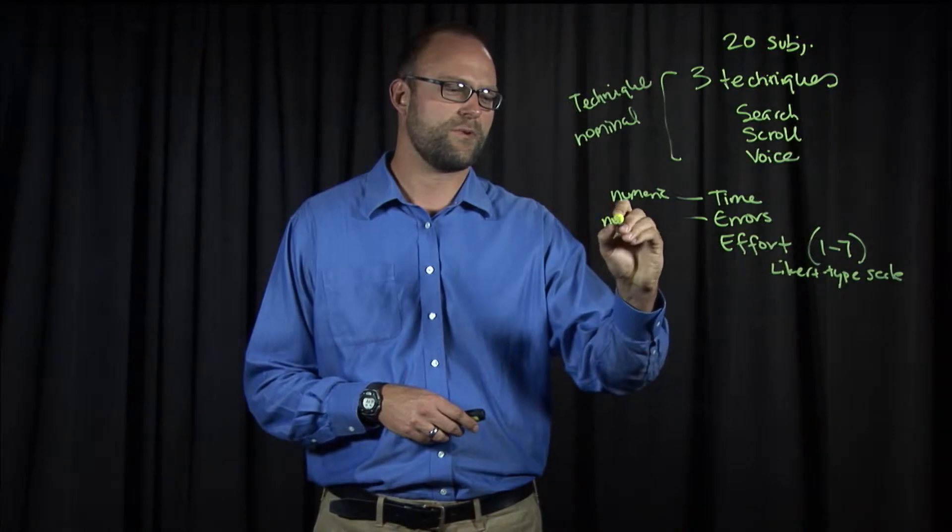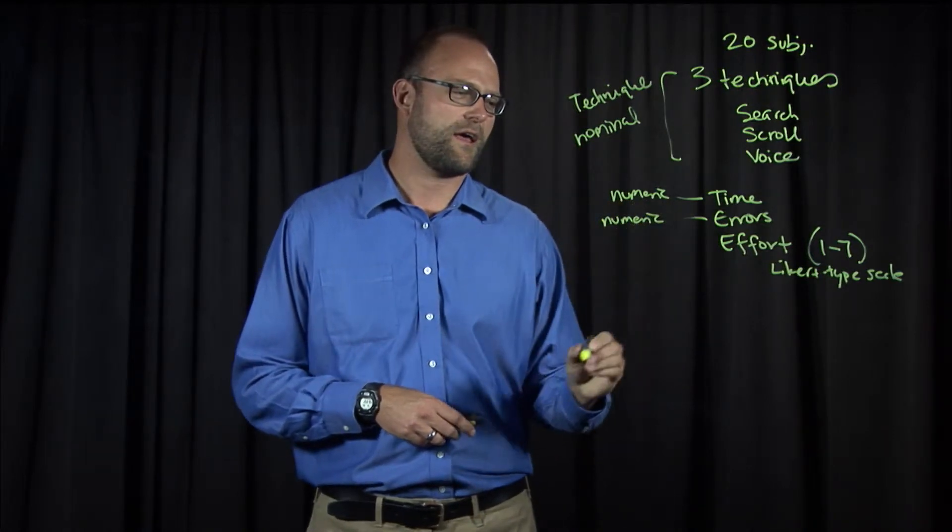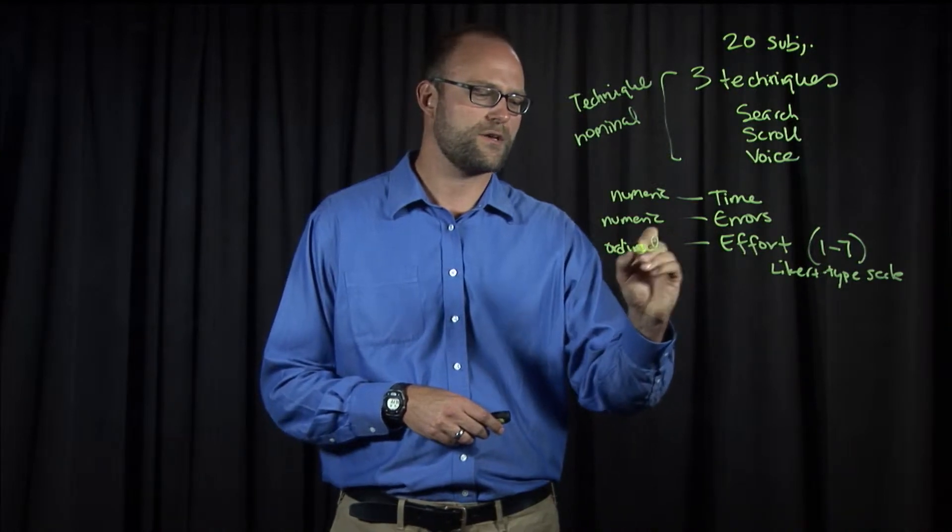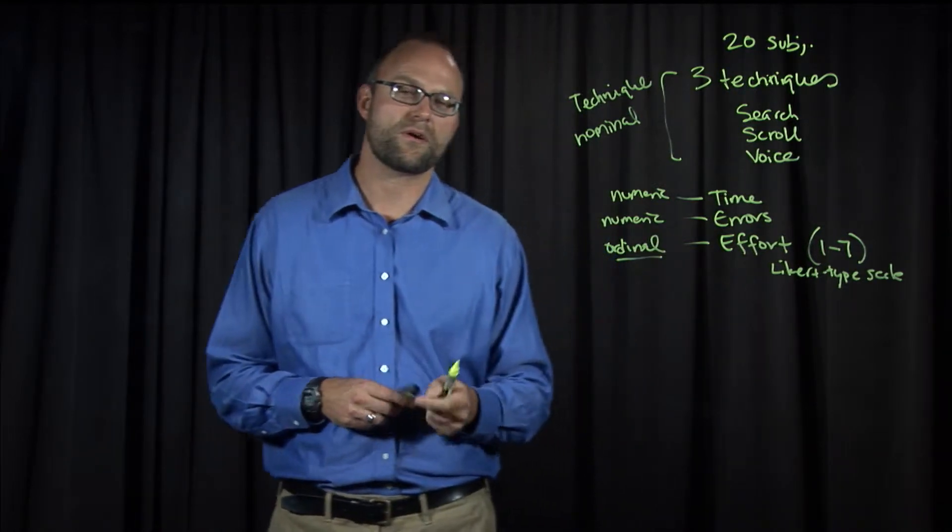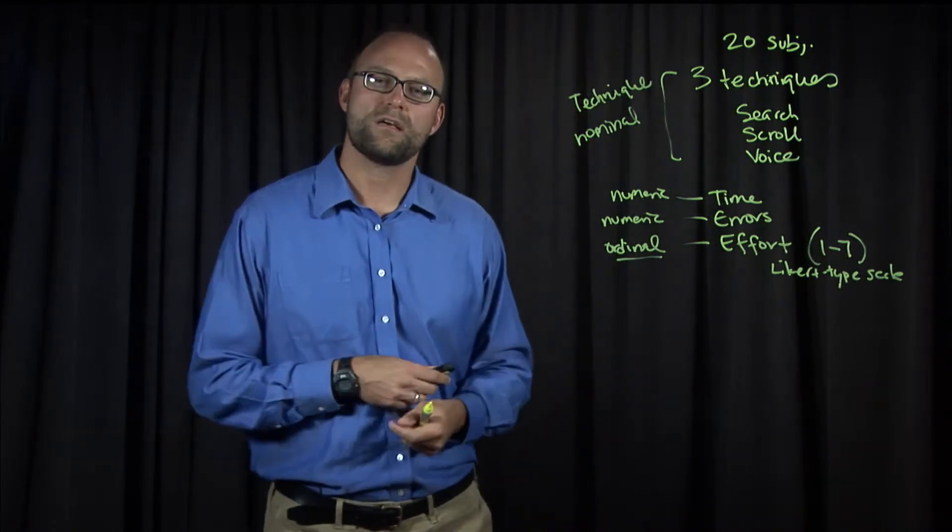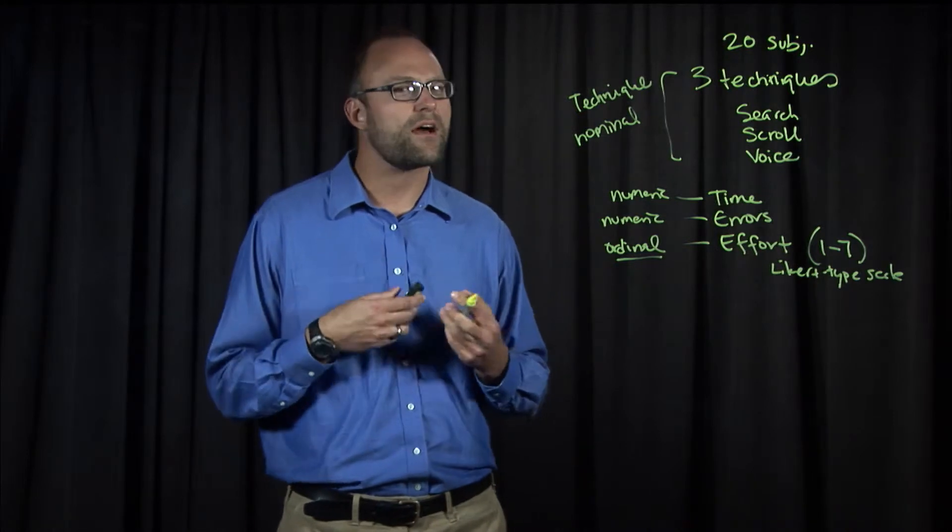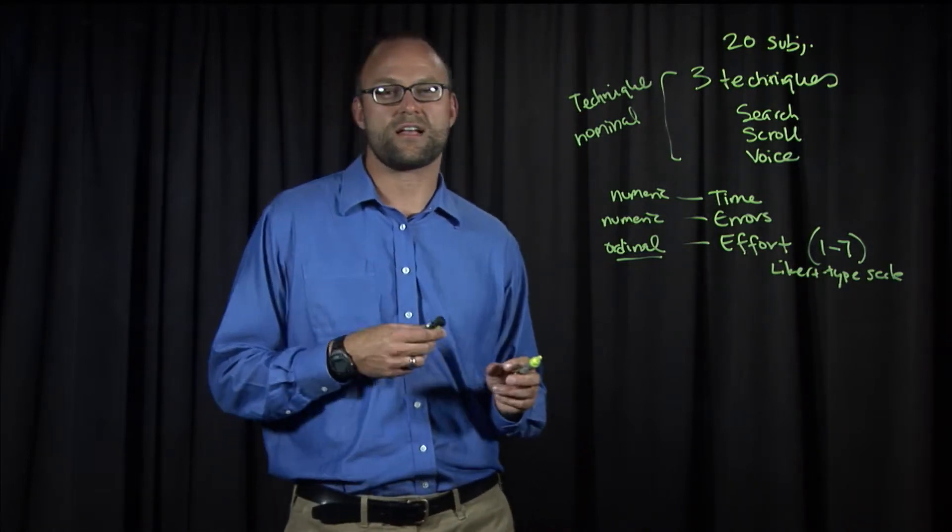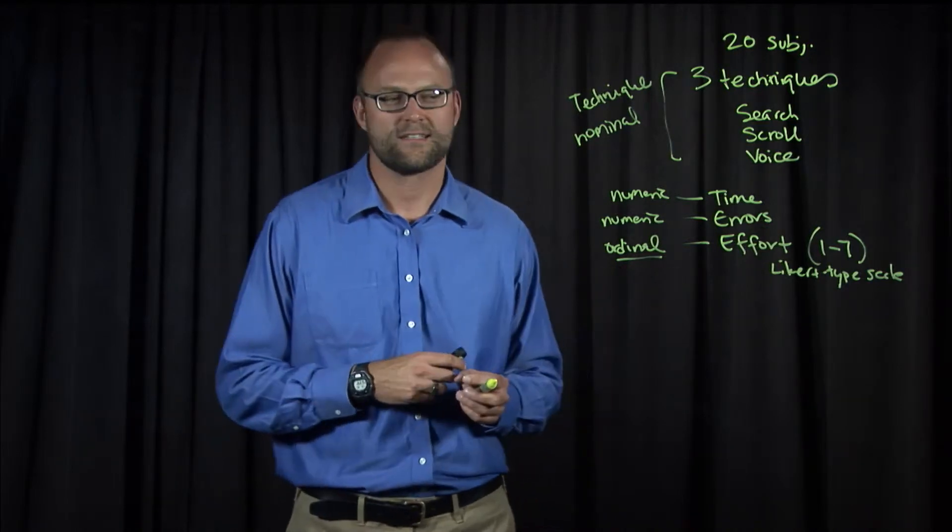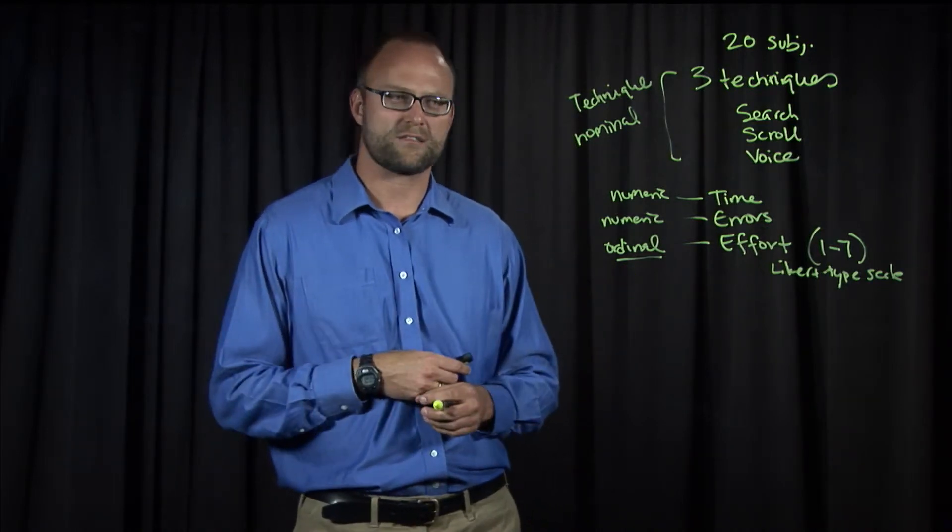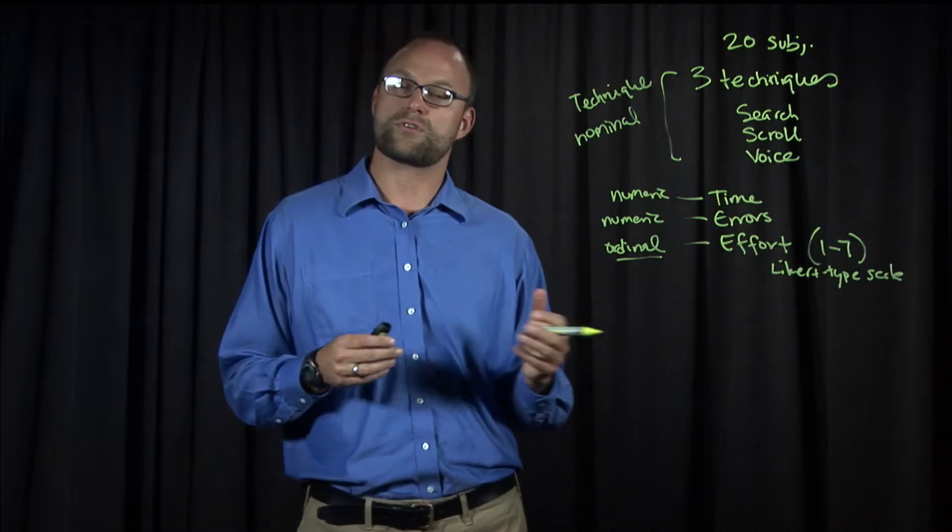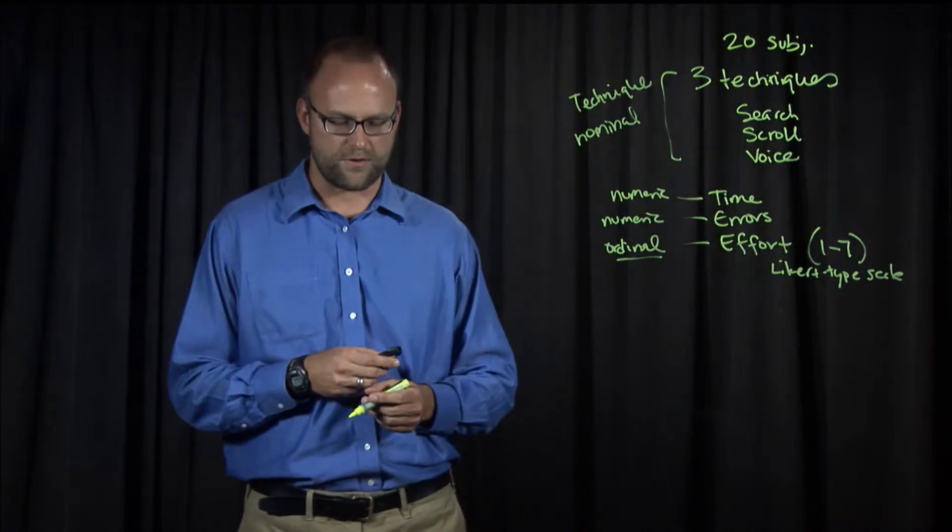We have errors, also numeric. And effort. This would be called an ordinal measure because a 1 to 7 scale, while it's a number, is an ordered scale. And the gap conceptually for a person between, say, 2 and 3 may not be how they perceive the gap between, say, 6 and 7, or 5 and 6. Those gaps may be bigger or smaller. They're more of a subjective concept. So that's called an ordinal variable where you know there's an order, but you don't know the distance between each step in that order.